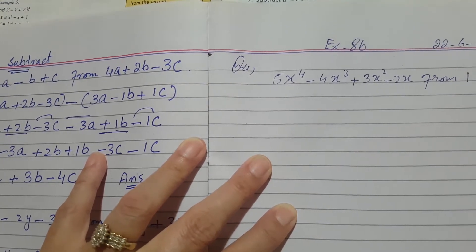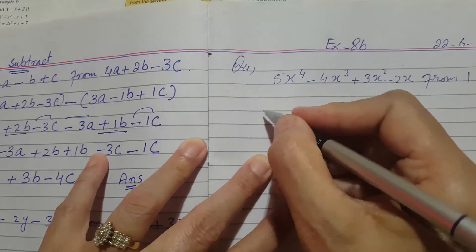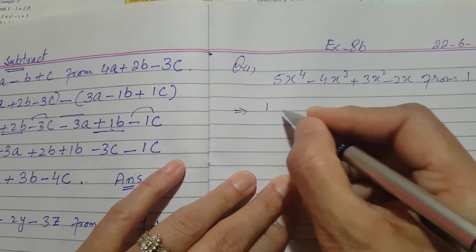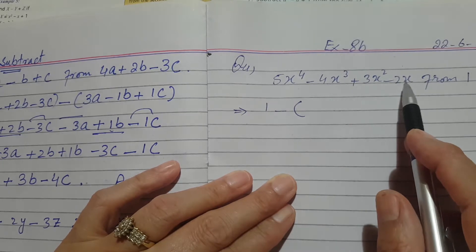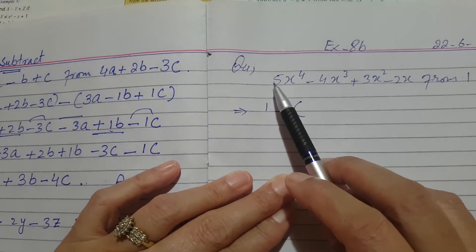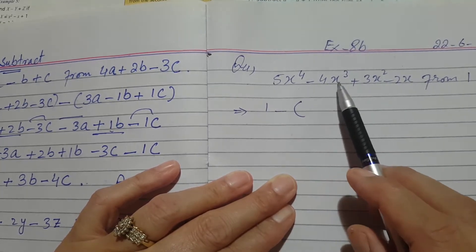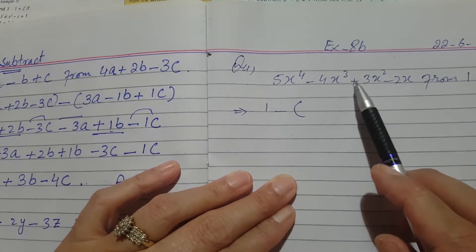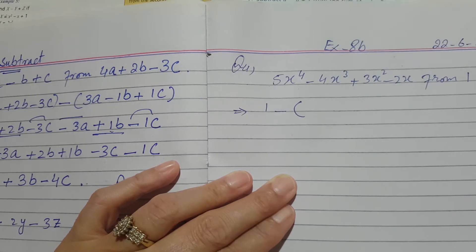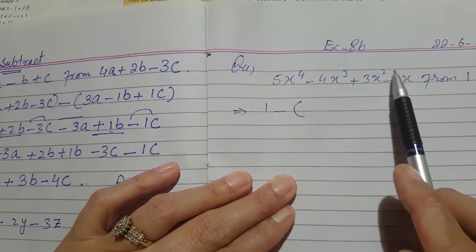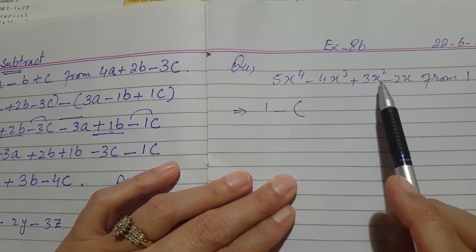You have to subtract the whole expression from 1, so 1 will be your first expression. The next expression has 4 terms: positive 5x to the power 4, minus 4x cube, plus 3x square, and minus 2x raised to the power 1. All the terms have different exponents, so all the terms are unlike terms.